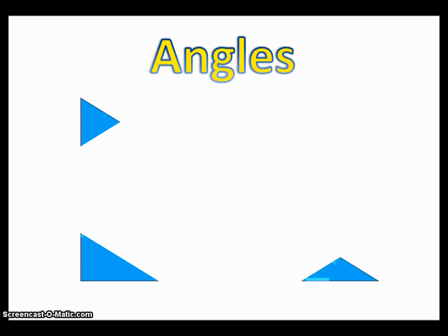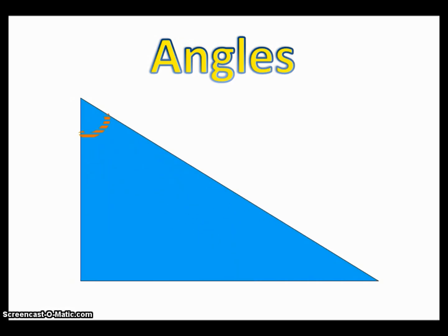Also, polygons have angles. So if we look at the triangle again, there's an angle up top, a smaller angle down bottom, and then another angle in the corner. This angle is a special angle. Does anyone remember what it's called? That's right. It's a right angle. So it has an L shape in that corner.